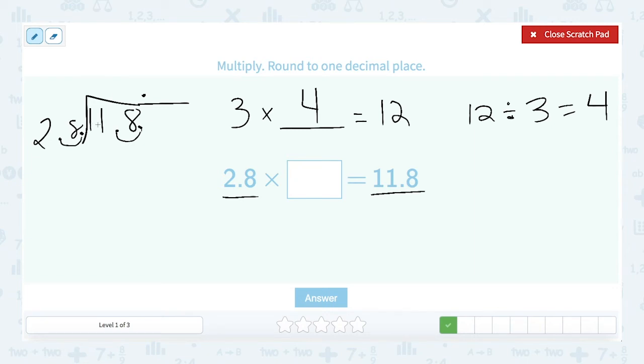28 doesn't go into 1. It doesn't go into 11. It does go into 118 and I can estimate 28 at 25. 25 goes into 100 four times. So 4 is probably a pretty safe bet. 4 times 8 is 32. 4 times 2 is 8 plus 3 is 11. 8 minus 2 is 6. And then 1 minus 1 is 0. 1 minus 1 is 0.